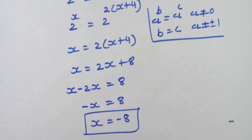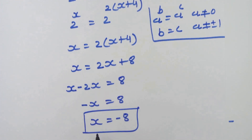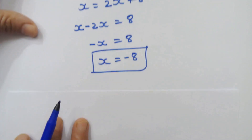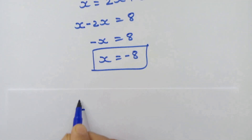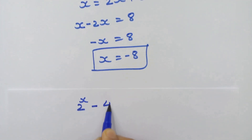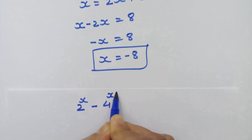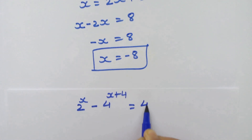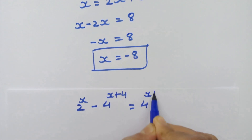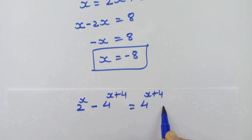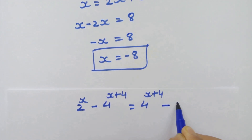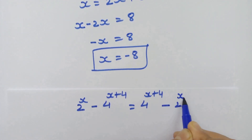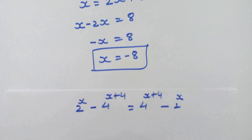Now we have the value of x. Let's check this answer. The main equation is 2 raised to x minus 4 raised to x plus 4 is equal to 4 raised to x plus 4 minus 2 raised to x.